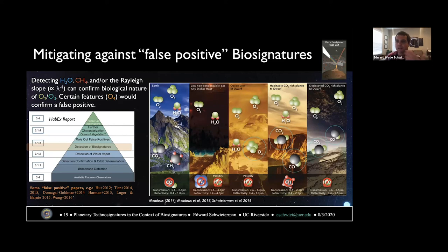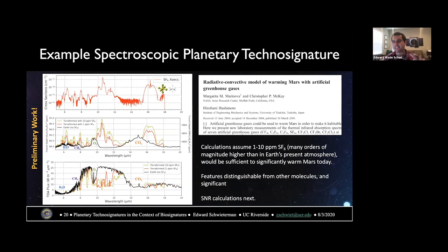The biosignature community has created various ways of mitigating against potential false positives based on planetary context and the different forms of gases found in the atmosphere — it may be worth doing something similar for technosignatures. As an example technosignature, based on a 2005 paper by Marinova, McKay, and Hashimoto about a model for warming Mars with artificial greenhouse gases, I computed the spectral features from the amount of sulfur hexafluoride (SF₆) they calculated would be required to warm early Mars. If a planet were really terraformed with an amount of SF₆ sufficient to create the radiative forcing needed to warm a planet like Mars, it would produce detectable spectroscopic features that could be sought in transmission or emission spectroscopy.